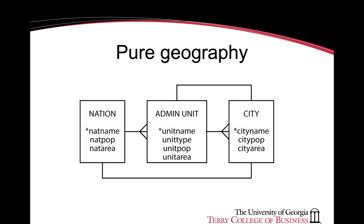A nation has many administrative units or states, and an administrative unit has many cities as part of it. The one-to-one relationship between city and nation captures information about the capital of the nation and the capital of the administrative unit. Foreign keys related to city name are present in the nation entity and the administrative unit entity, representing the capitals of the nation and the state.